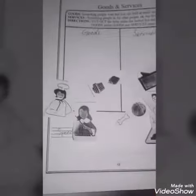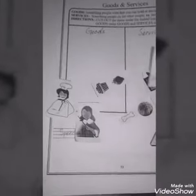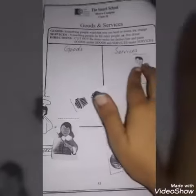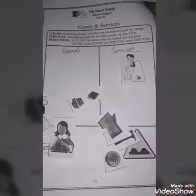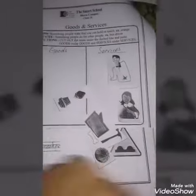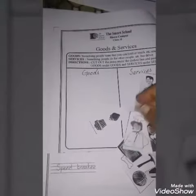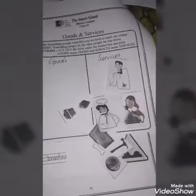Cutting ho gaya — cutting is done. Ab in ko paste karna hai. Services woh kaam hain jo hum doosroon ke liye karte hain. So the doctor, teacher, and chef — these are services. We paste the services in the services column.